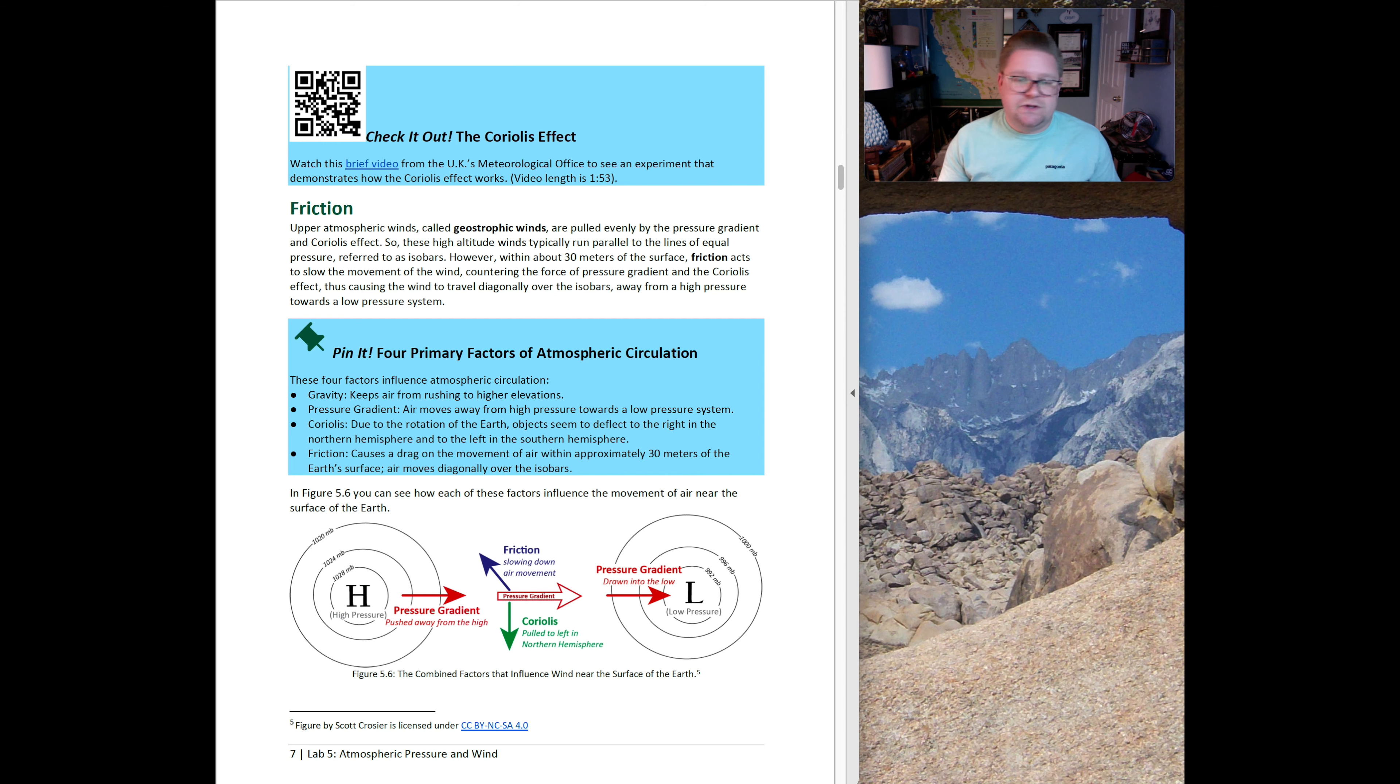Another factor is friction. The upper atmospheric winds are called geostrophic winds. They're pulled evenly by the pressure gradient and the Coriolis effect. These high altitude winds typically run parallel to the lines of equal pressure. These four factors influence atmospheric circulation: gravity, pressure, Coriolis effect, and friction. Figure 5.6 shows the combined factors that influence wind near the surface of the earth. This is a great image that Scott put together because you're able to visualize all these four attributes in one spot.